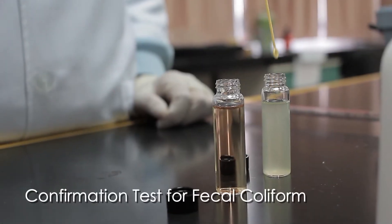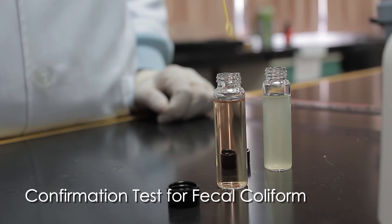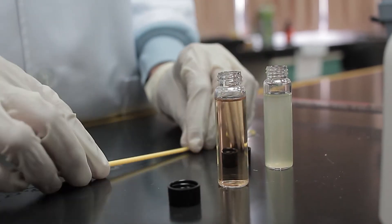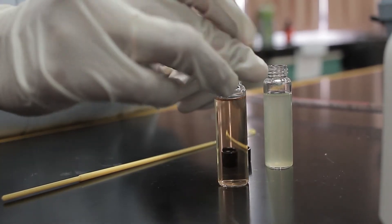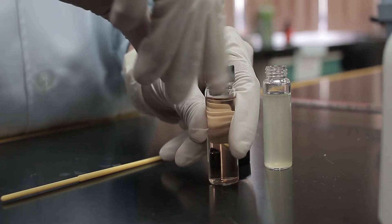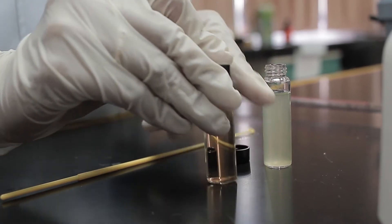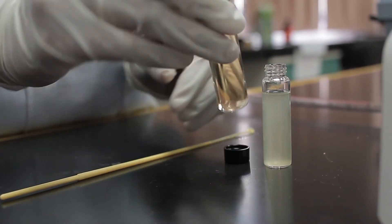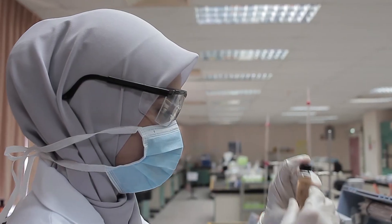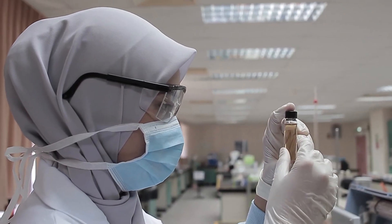From the positive cloudy LT broth tube, inoculate a BGB broth tube by using a sterile disposable inoculation loop. Put the loop into the positive LT broth tube and immediately into a BGB broth tube. Invert the tube to remove air from the inner vial. Examine the tube to ensure there are no bubbles.